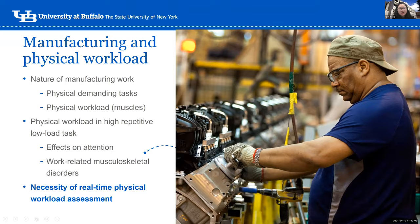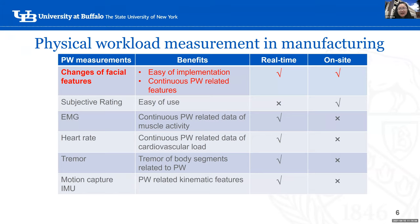Previous research has used many methods to assess physical workload, but existing methods have limitations for real-time on-site manufacturing use. For example, EMG measures muscle activity and provides continuous data, but it is highly sensitive to electronics and magnets in the environment, and requires static postures that are obviously not feasible in manufacturing where workers are always moving. Most methods are sensitive to the environment and limit the workspace in manufacturing settings.